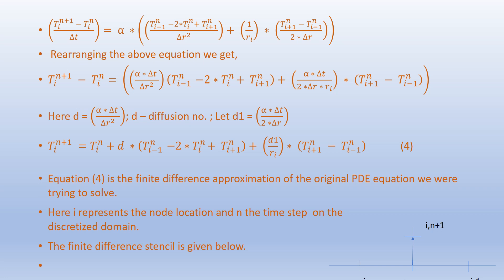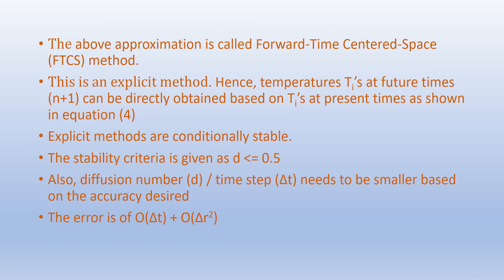The finite difference stencil is given below. This approximation is called forward time centered space, or FTCS method. This is an explicit method — temperatures T_i at future times n+1 can be directly obtained from T_i at present times n as shown in equation 4. Explicit methods are conditionally stable; the stability criterion is that diffusion number D must be less than or equal to 0.5.